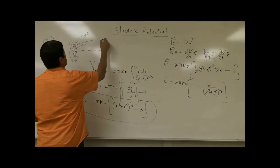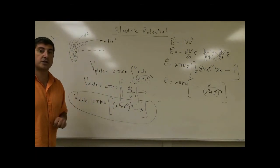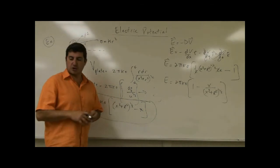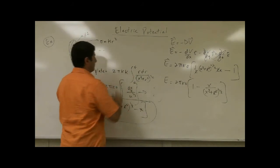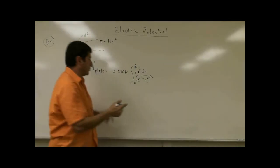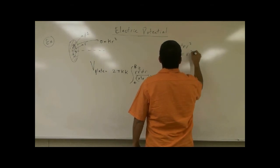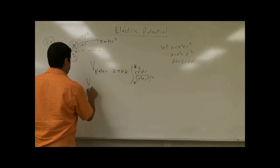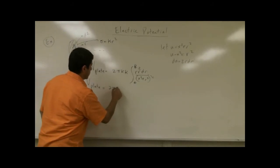Now let's check what happens if the surface charge density is kappa r squared — a non-uniform charge density. Let's derive the equation for the potential of that and see what happens. Similar to the uniform case, you will have 2 pi k, but instead of sigma you will have kappa, and then you will have an extra r squared factor in the integrand. Using the substitution: let u equal x squared plus r squared, so u minus x squared equals r squared, and du equals 2r dr.